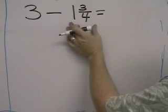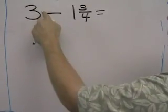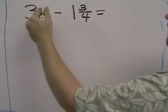Here we need to subtract a mixed number from a whole number. You'll notice that there's no fraction right here. We can kind of put in a fraction.